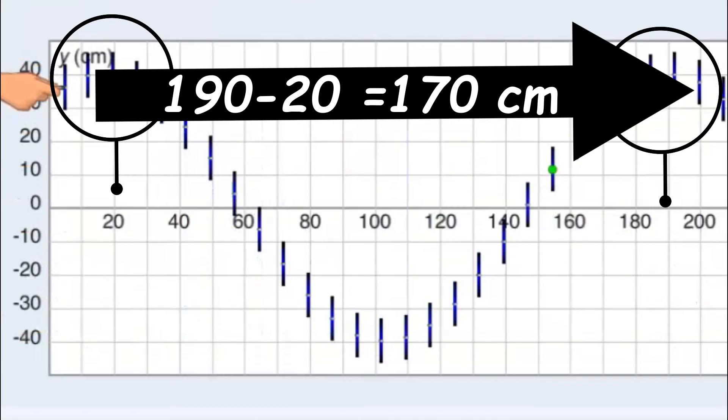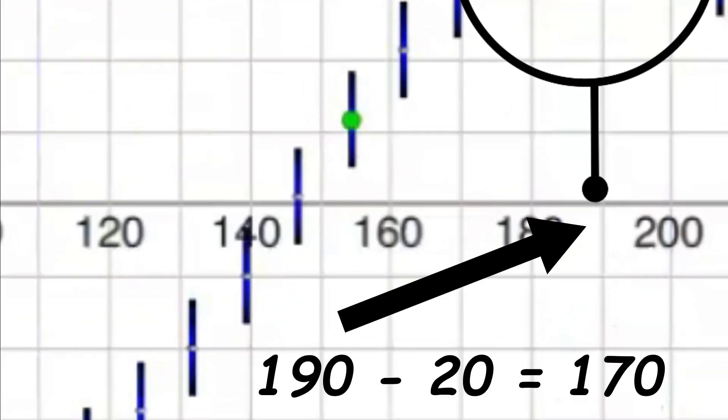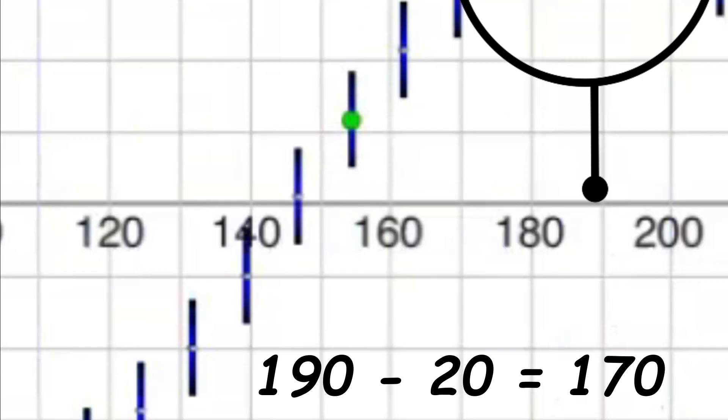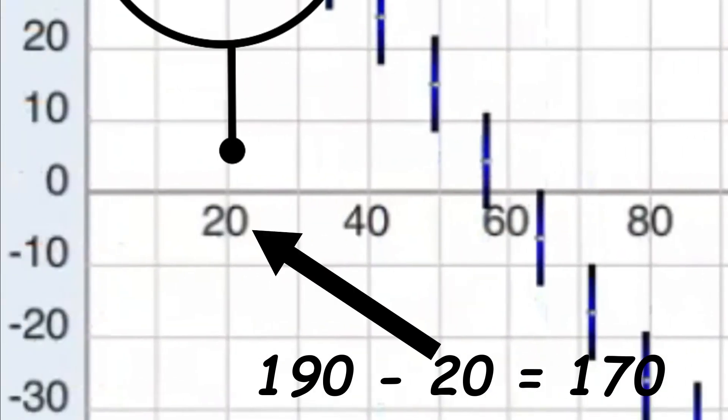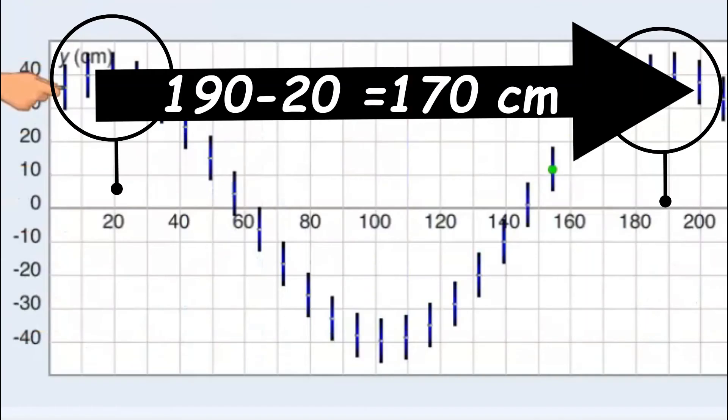The wavelength is 170 centimeters. We first need to find the ending point on the X axis and we see that it is 190 centimeters. We then subtract the starting point which is 20 and that is how we get 170 centimeters.